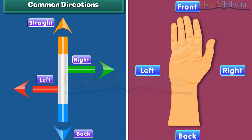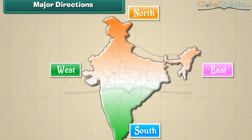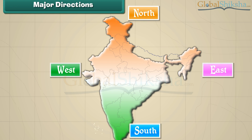We can use our hands to indicate common directions: left, right, front, and back. There are four main directions: north, east, south, and west. The four letters N, E, S, and W represent these directions.